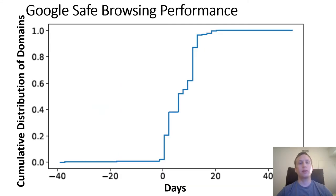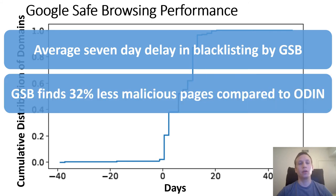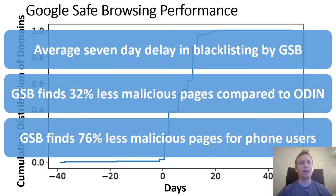To understand how blacklists perform in this adversarial setting, we studied Google Safe Browsing (GSB). GSB rarely finds a domain to be malicious before Odin and has an average 7-day delay. GSB also finds 32% fewer malicious pages compared to Odin. Most alarmingly, GSB finds 76% fewer malicious pages for phone users, showcasing the critical importance of studying TDSs across multiple different types of users.